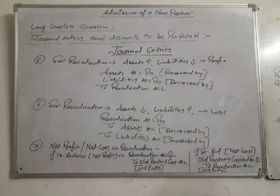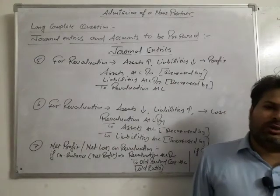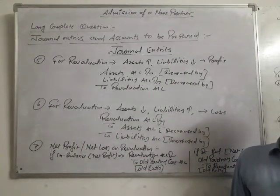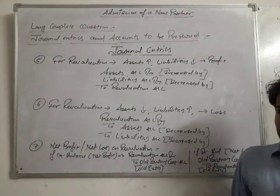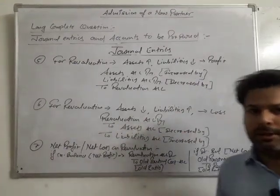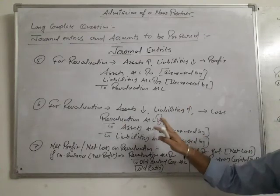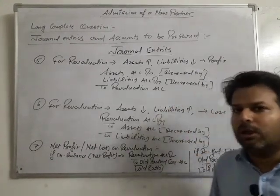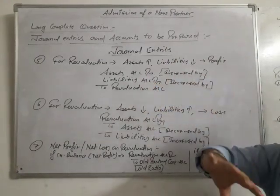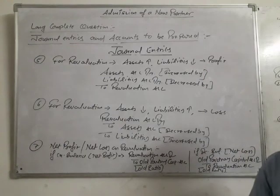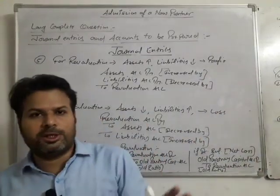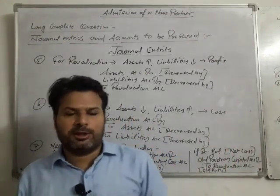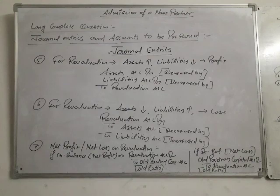These revaluation entries are done. I want to tell you that minimum 7 entries will be made in a long question — covering reserves, goodwill, and revaluation accounting. More can be added depending on the situation, for example if a partner takes an asset, then the capital account reduces accordingly. But for common entries, a long question will have 7 entries. In the next class, I will teach you how to prepare accounts after these journal entries.